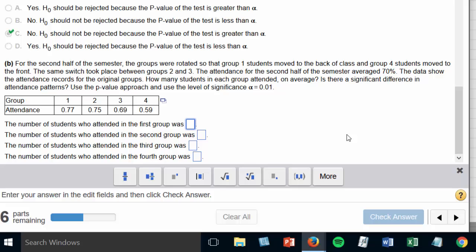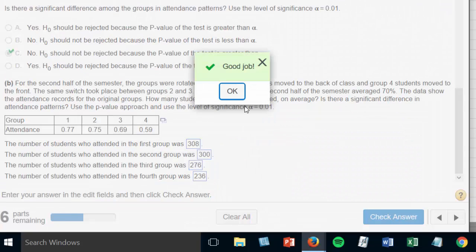400 times 77% for group 1, that's 308. 400 times 75% for group 2, that's 300. For group 3, 400 times 69% is 276. And for group 4, 400 times 59% is 236. Check that answer. Good job.